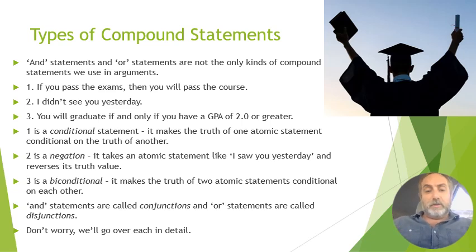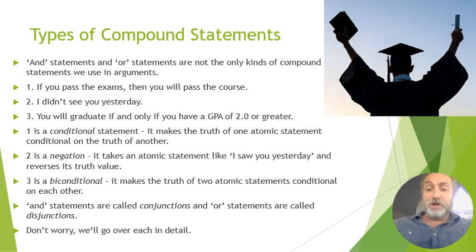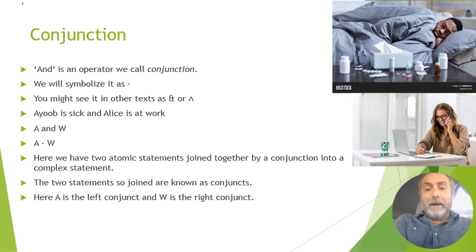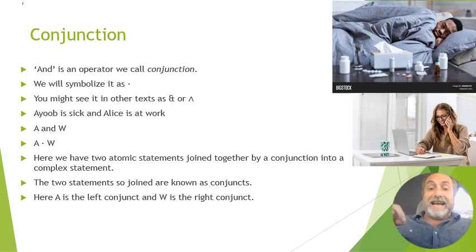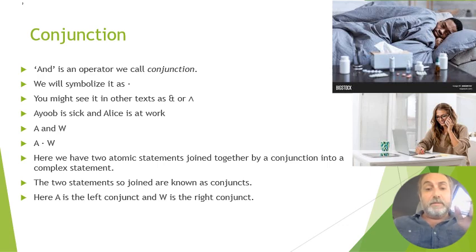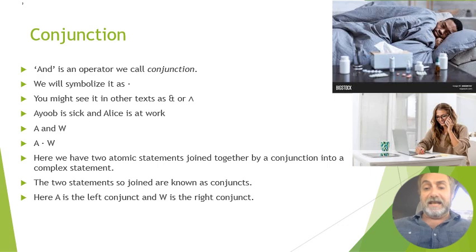Each statement type has a special name. 'If-then' statements are conditionals; 'not' statements are negations; 'if and only if' are biconditionals; 'and' statements are conjunctions; 'or' statements are disjunctions. Let's look at conjunction in more detail. 'And' is symbolized as a dot in the text. For example, 'Iube is sick and Alice is at work' translates as A dot W, where A represents 'Iube is sick' and W represents 'Alice is at work.'